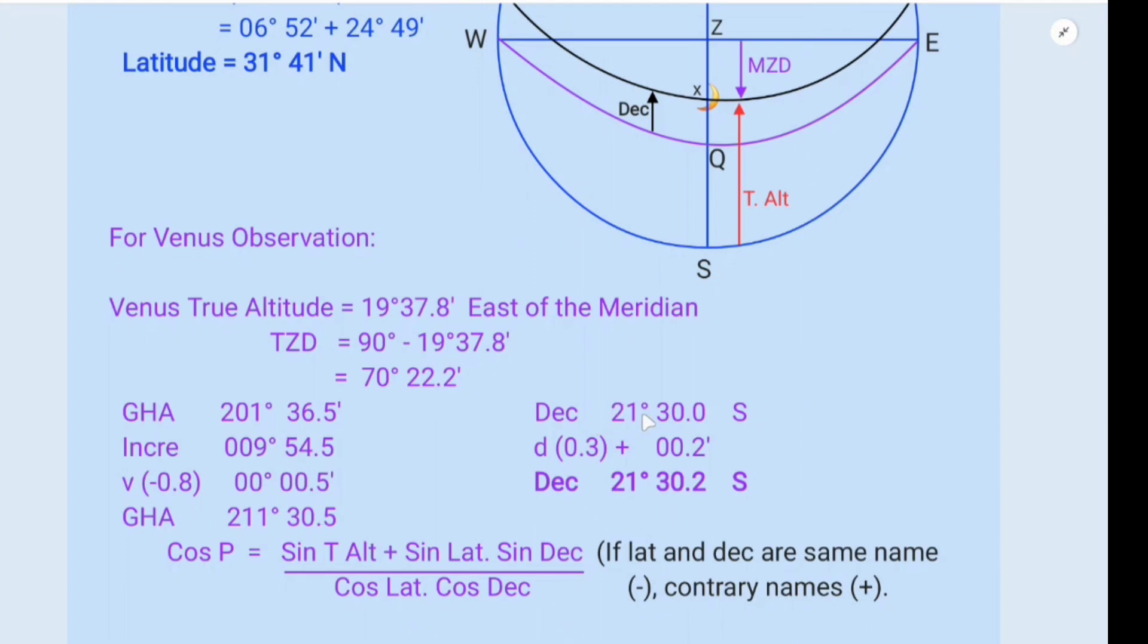Declination is 21 degrees 30.0 south. d correction is 0.3, and for 0.3 it is 0.2 minutes. So if you add together you get the declination as 21 degrees 30.2 minutes south.